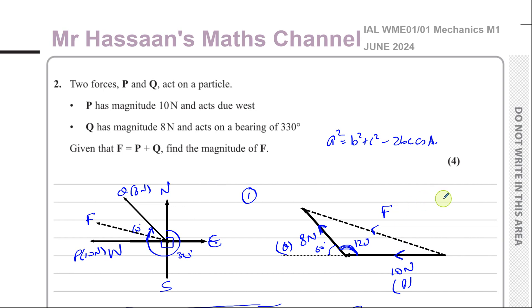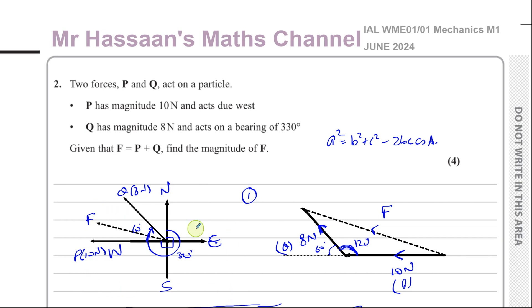So that answers question number 2 from the June 2024 Mechanics M1 paper from Edexcel. If you'd like to see other questions from this paper, click on the link that will appear at the end of the video. If you'd like to see questions on forces, resultant forces, and vectors, click on the link here. You can subscribe to the channel by clicking on this link, and the video at the top will show you how to use my channel effectively. Thank you for watching and see you soon.